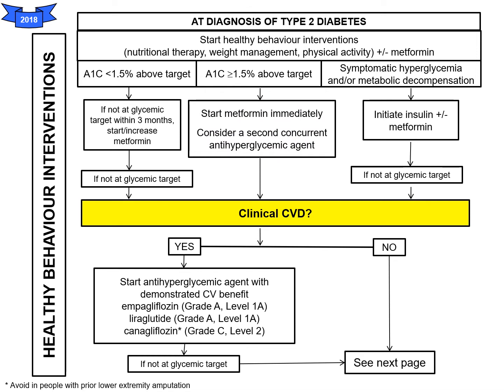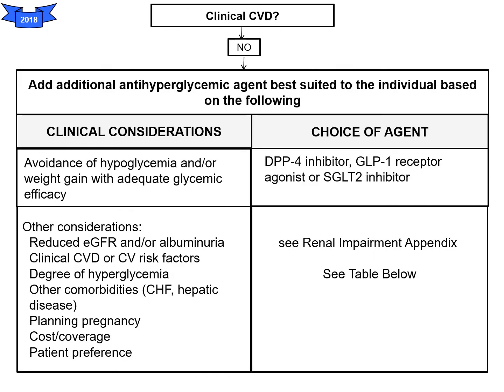If patients have clinical cardiovascular disease, you start an antihyperglycemic agent with demonstrated CV benefit, including empagliflozin, liraglutide, and canagliflozin. If there is no clinical cardiovascular disease and not at glycemic target, you should add an additional antihyperglycemic agent best suited to the individual, with avoidance of hypoglycemia and/or weight gain with adequate glycemic efficacy. The choice of agent would include a DPP-4 inhibitor, a GLP-1 receptor agonist, or an SGLT-2 inhibitor.